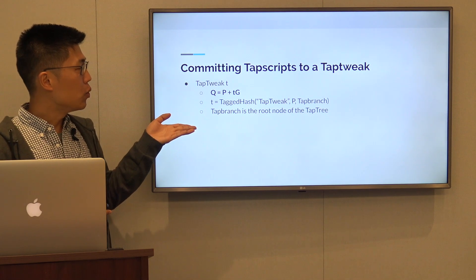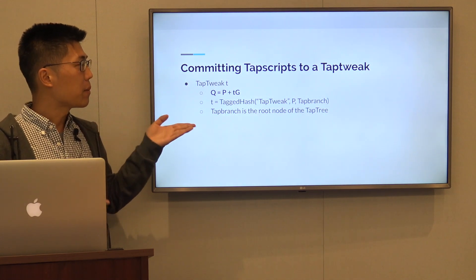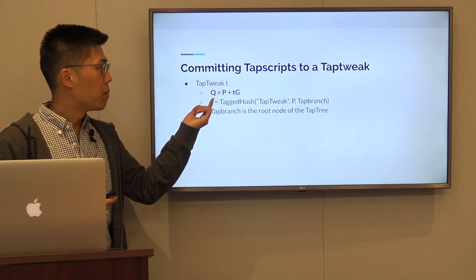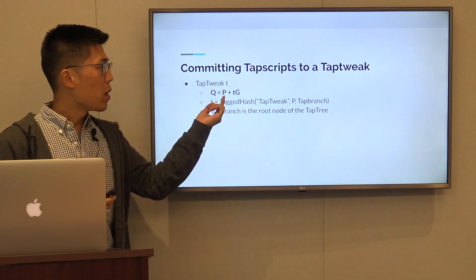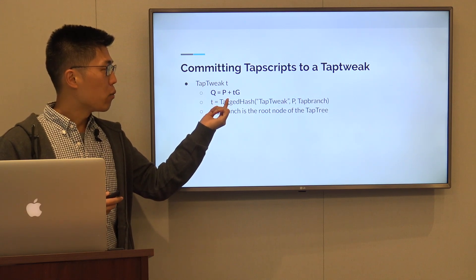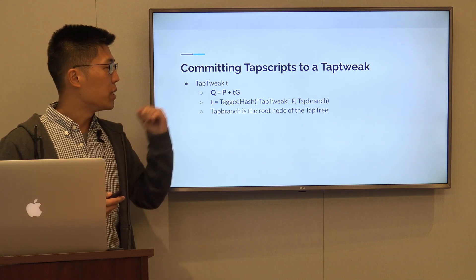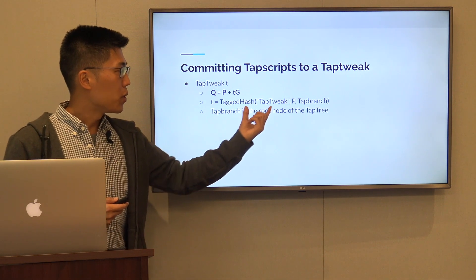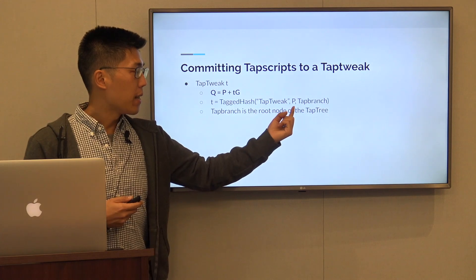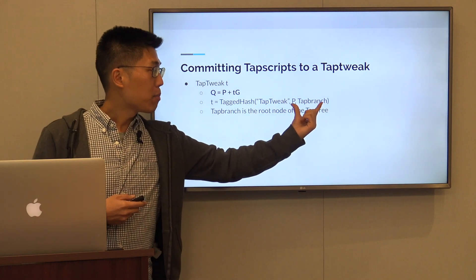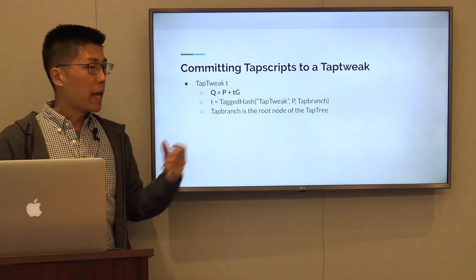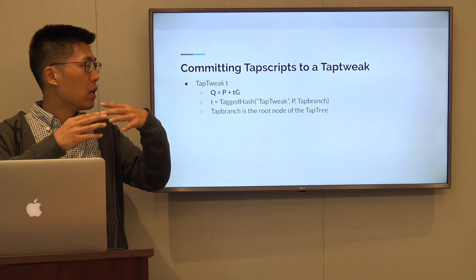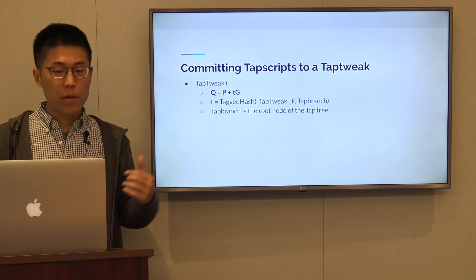This is similar to how we committed a single TAP script to the TAP tweak before. We have our TAP root public key Q, we have our internal key P, and we are tweaking it with the tweak T. T, in this case, consists of the tag hash with the tag TAP tweak, and the input will be the public key and a TAP branch. Now for a TAP tree, this TAP branch is the root node of the TAP tree that we are committing.